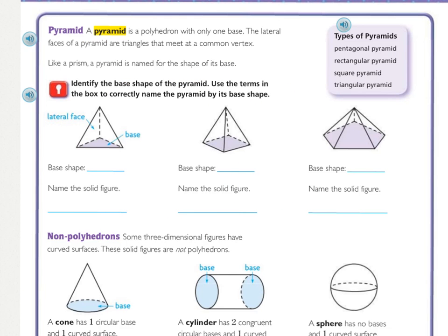The front page is all about polyhedrons. That's one that has two bases connected with lateral sides, lateral faces that are rectangles. Now we're going to be talking about pyramids. A pyramid is a polyhedron, which means it has three dimensions with only one base. The lateral faces of a pyramid are triangles that meet at a common vertex. The vertex is where line segments come together. So in this case, it has a point. Like a prism, a pyramid is named for the shape of its base.